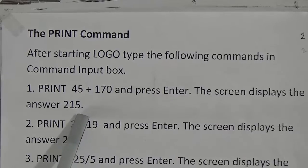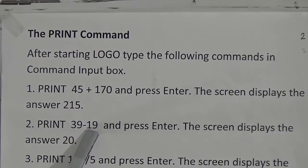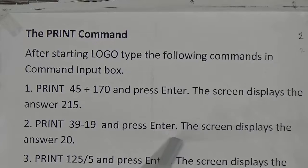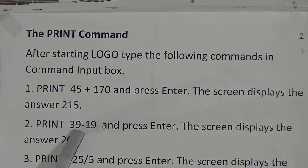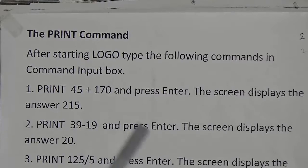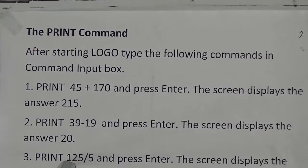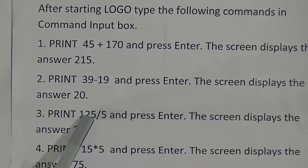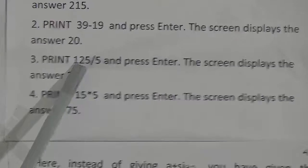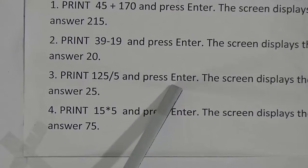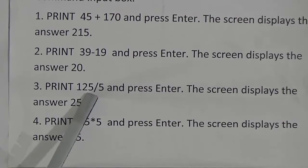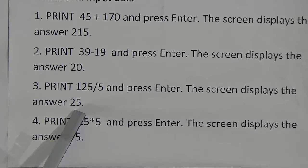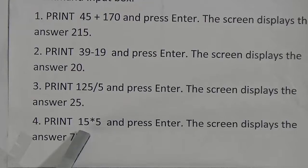Number 2: print 39 − 19 and press Enter. This is subtraction. The screen displays the answer 20, because 39 minus 19 equals 20. Number 3: print 125 ÷ 5 and press Enter. The screen displays the answer 25, because 125 divided by 5 equals 25.